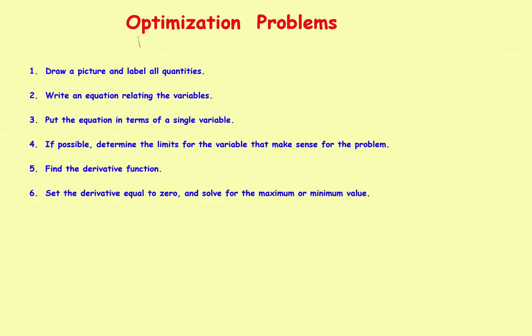As we go through these problems, we'll follow six steps. Step one: draw a picture and label all the quantities. Step two: write an equation that relates all the variables. Step three: get the equation in terms of a single variable rather than several variables. Step four: if possible, determine the limits for the variable that make sense for the problem.